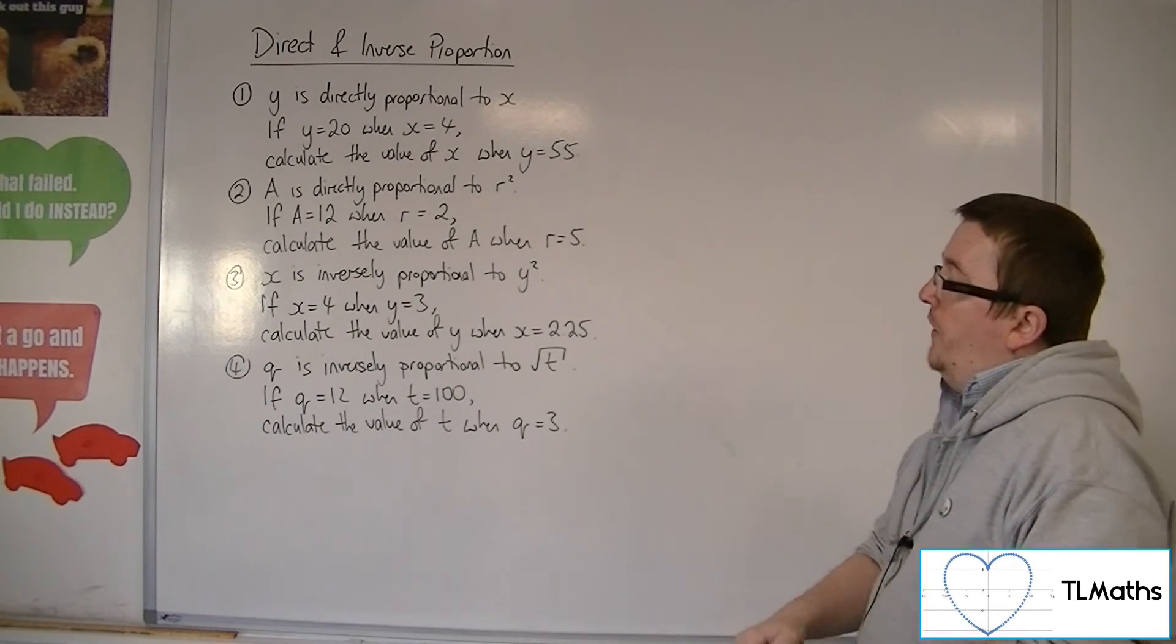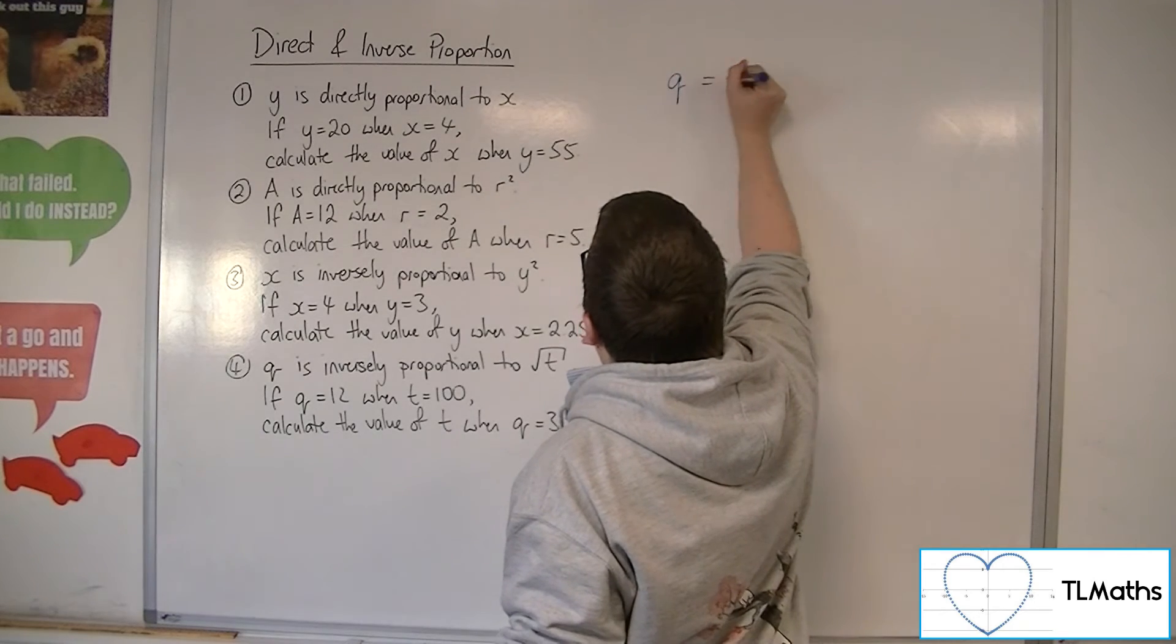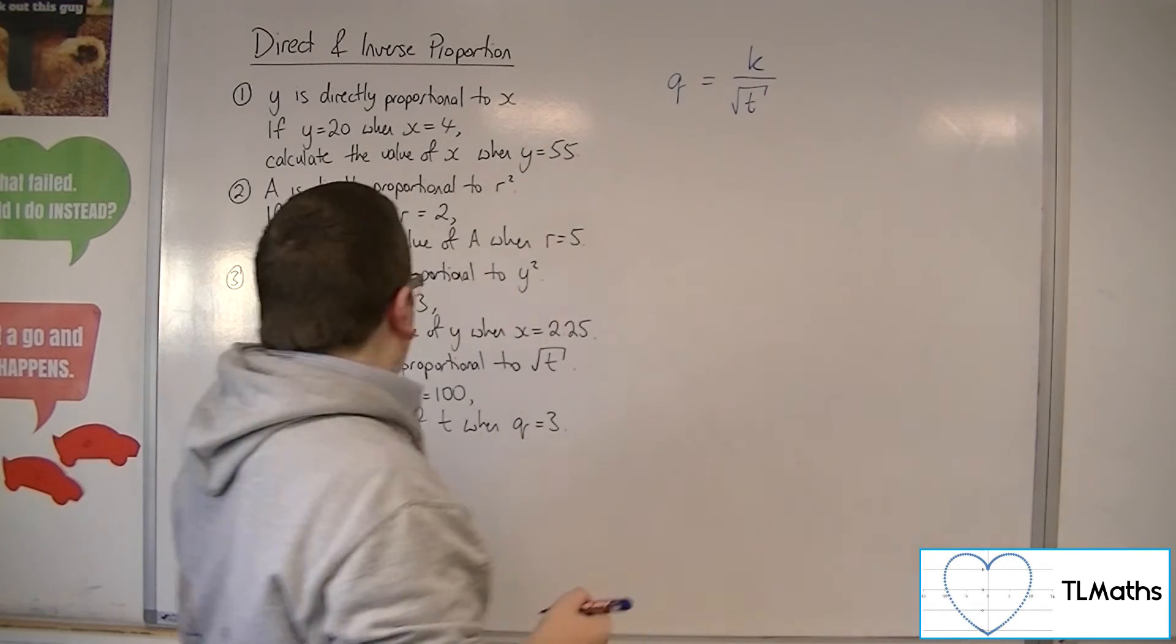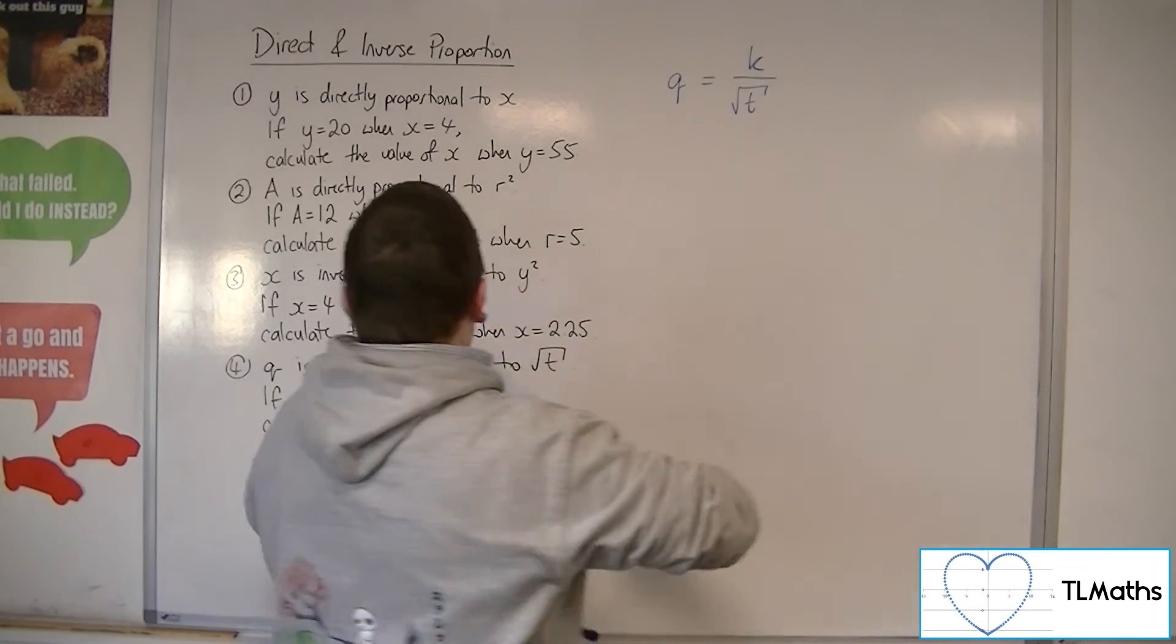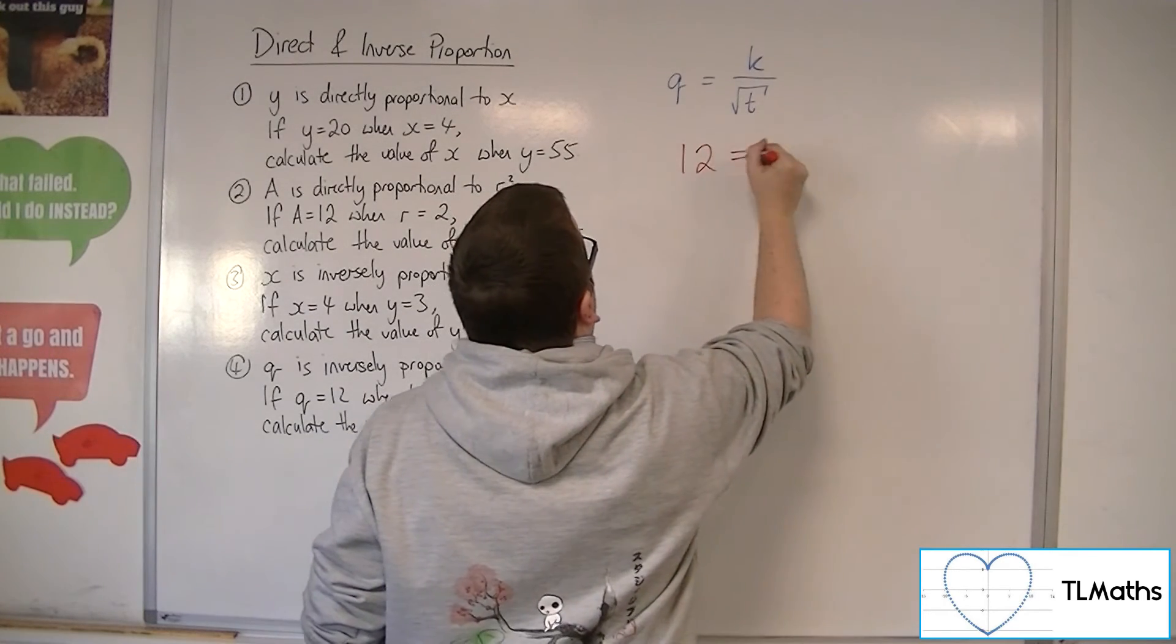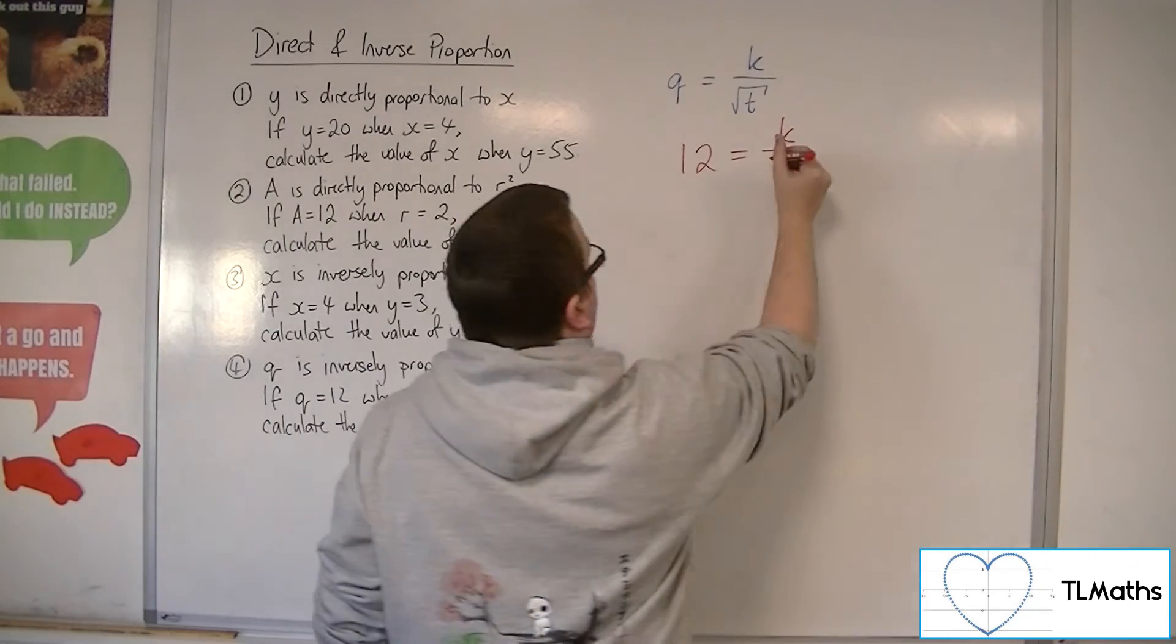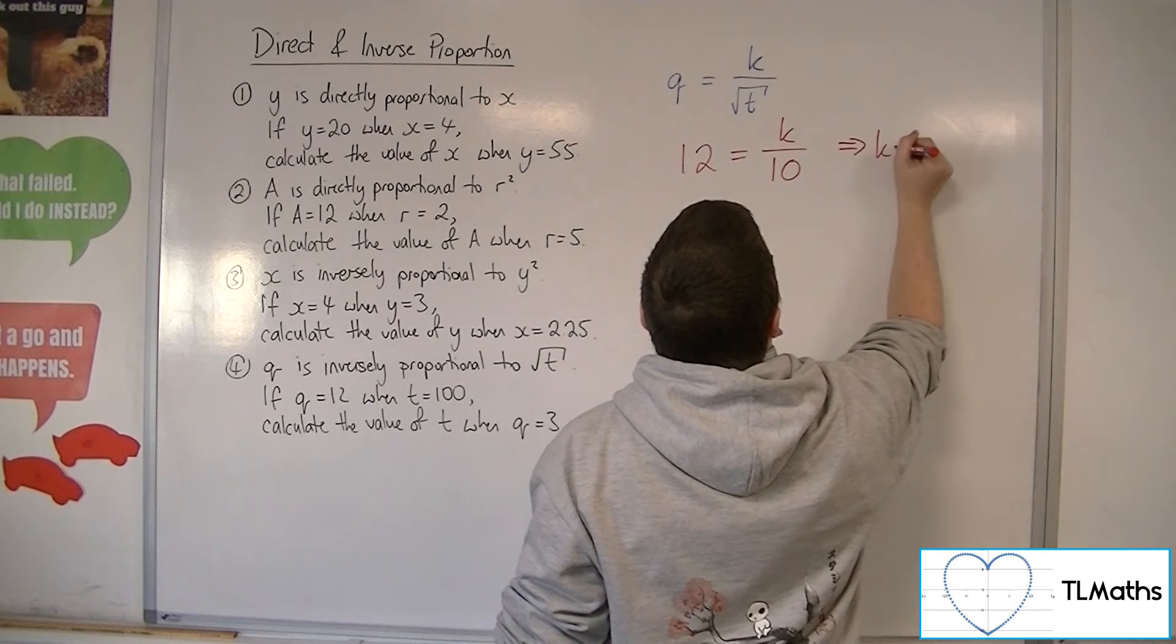And lastly, q is inversely proportional to root t. So q is equal to k over root t. If q is equal to 12, when t is 100, so 12 is equal to k over, well, the square root of 100 is 10. So that must mean that k is 120.